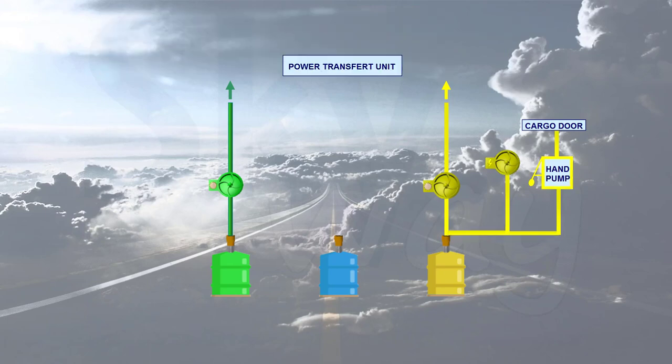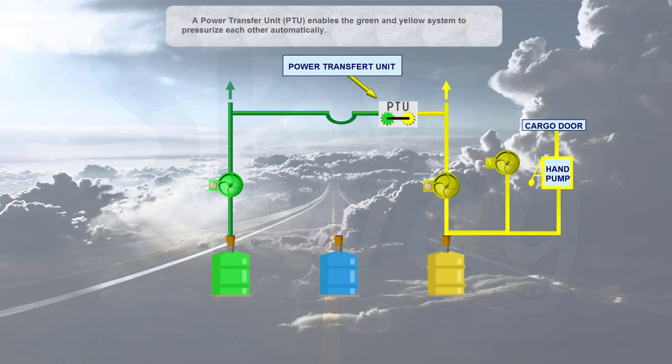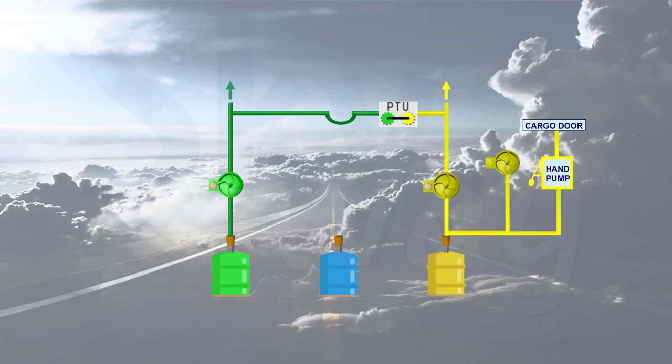A Power Transfer Unit (PTU) enables the green and yellow systems to pressurize each other automatically. Fire shutoff valves are located between the reservoirs and the engine-driven pumps. They are controlled by the engine fire push button switches.